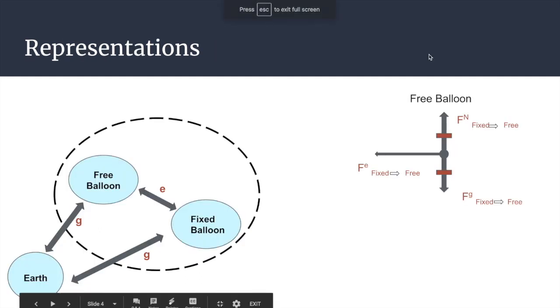For our system schema, we only included the electrical interaction between the two balloons inside of the dotted lines because that was our main focus, but the earth will still have a gravitational interaction with each balloon.